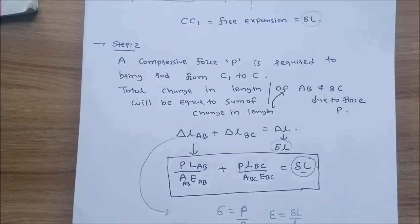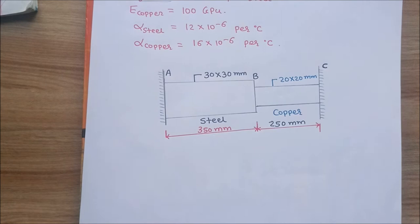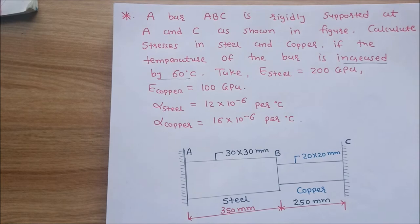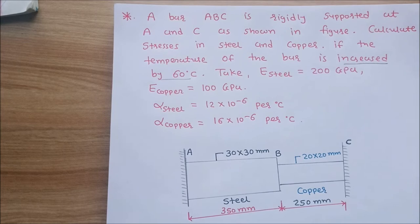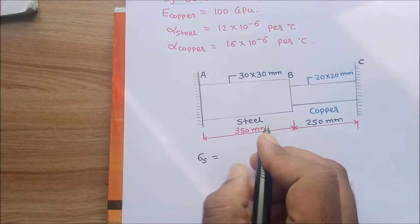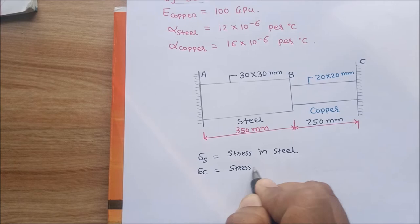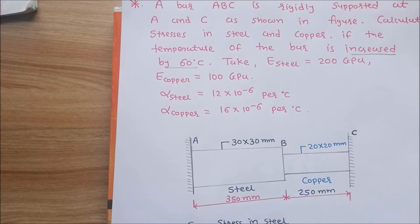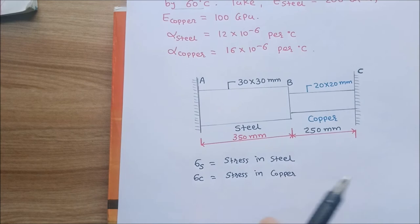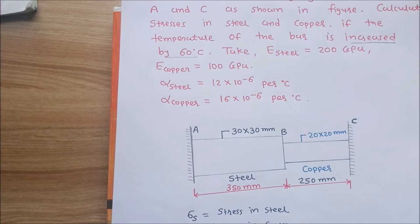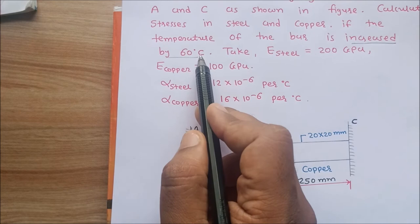Now we solve this numerical step by step. Data given: bar ABC is rigidly supported at A and C. We find stresses in steel (sigma_s) and copper (sigma_c). The temperature of the bar is increased by 60 degrees Celsius, so T = 60°C.